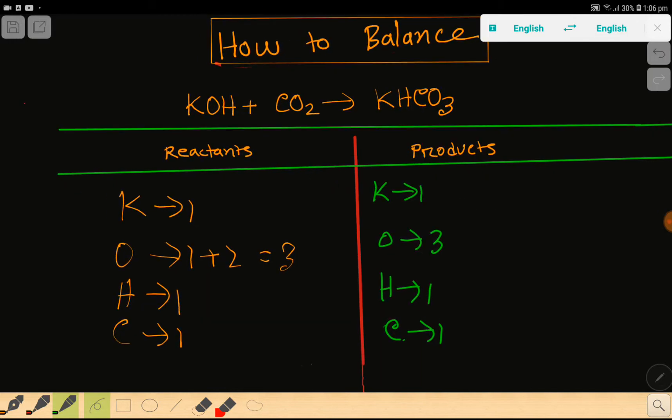To balance this reaction means we have to balance the number of potassium, oxygen, hydrogen, and carbon from both sides of this reaction. On the left side, we have one potassium, three oxygen, one hydrogen, and one carbon.